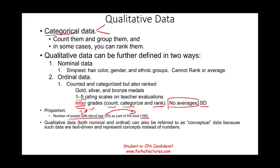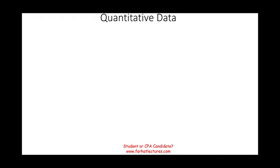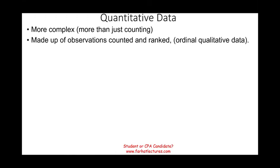So qualitative data, whether it's nominal or ordinal, can also be referred to as conceptual data because such data are text-driven and represent concepts instead of numbers. This is what qualitative data is, it's not numbers. We're not talking about quantity, and quantity usually implies numbers.